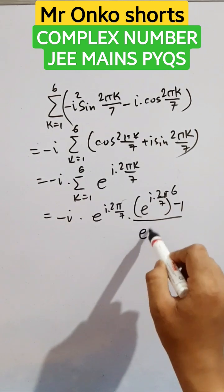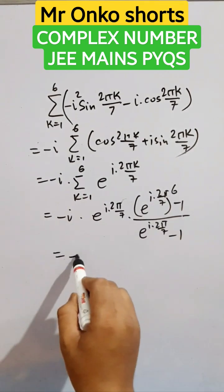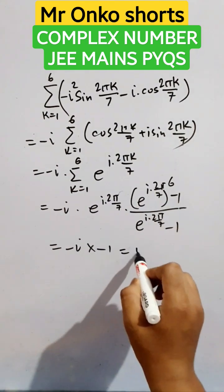So, e raised to the power i 2 pi by 7, raised to the power 6 minus 1, over e raised to the power i 2 pi by 7 minus 1. Now solving it, minus 1, so the answer will be i.